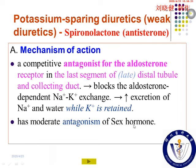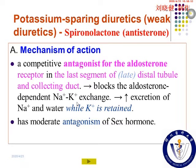Let's go on to study potassium-sparing diuretics, which are weak diuretics. First, study spironolactone. It is also named antisterone because it is a competitive antagonist for the aldosterone receptor in the last segment of the distal tubule and collecting duct. So it can block the aldosterone-dependent sodium-potassium exchange.